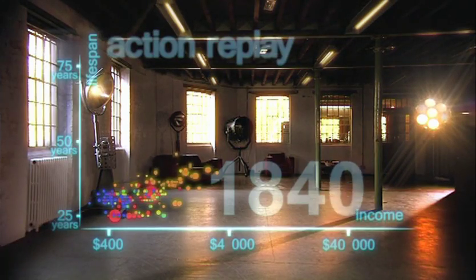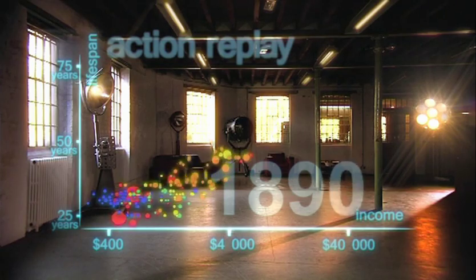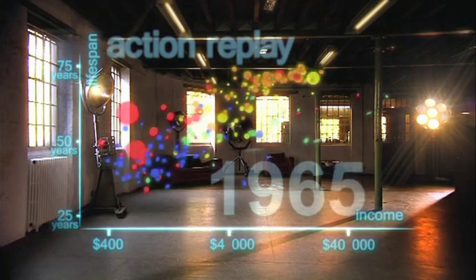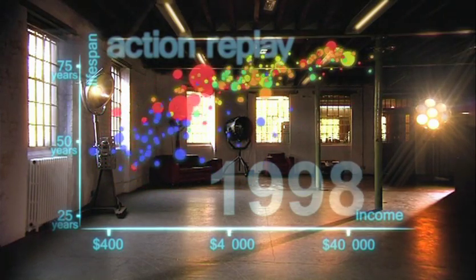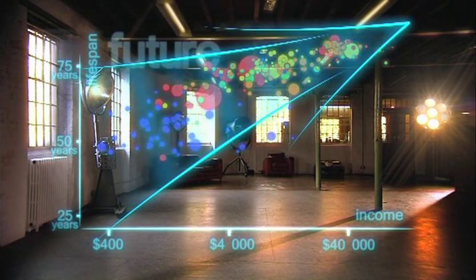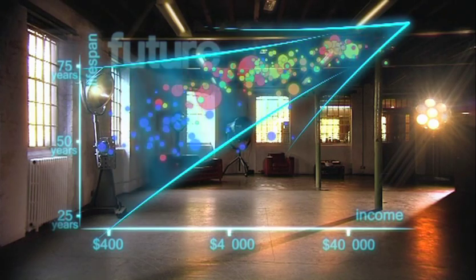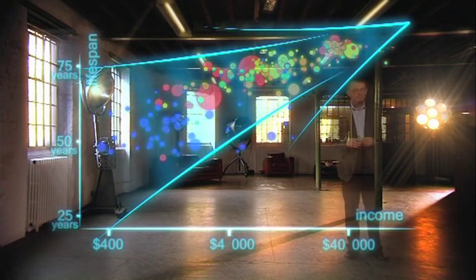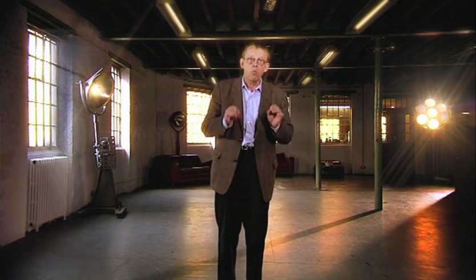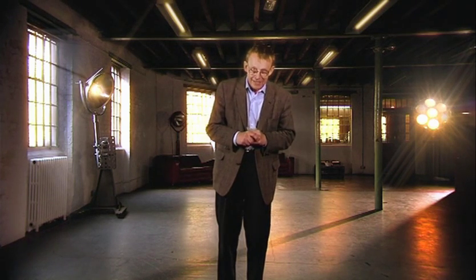And yet, despite the enormous disparities today, we have seen 200 years of remarkable progress. That huge historical gap between the West and the rest is now closing. We have become an entirely new, converging world. And I see a clear trend into the future. With aid, trade, green technology, and peace, it's fully possible that everyone can make it to the healthy, wealthy corner. What you have seen in the last few minutes is a story of 200 countries shown over 200 years and beyond. It involved plotting of 120,000 numbers. Pretty neat, huh?